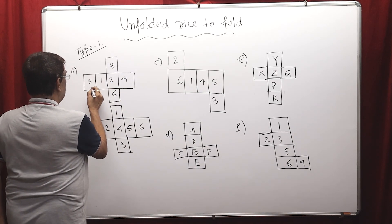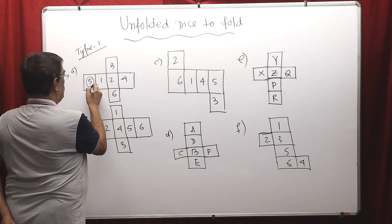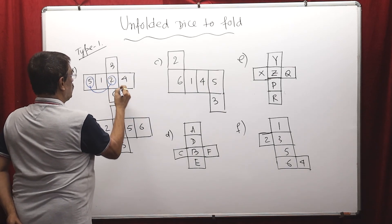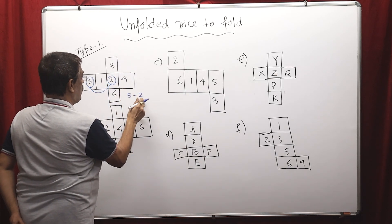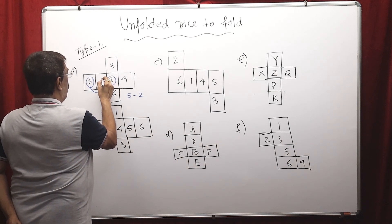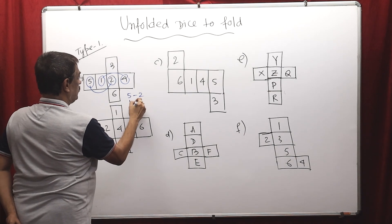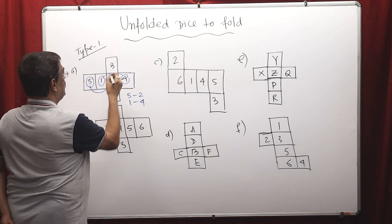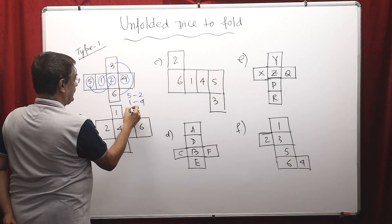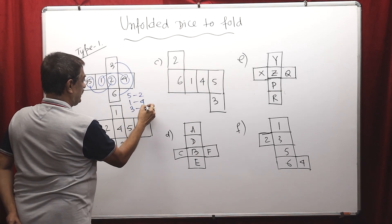First of all, start from here. Skip one box to this box. So 5 opposite 2 and 2 opposite 5. Now, 1 opposite is 4, 4 opposite is 1. Then 3 opposite is 6, 6 opposite is 3.